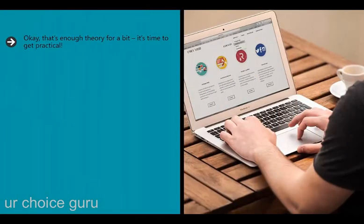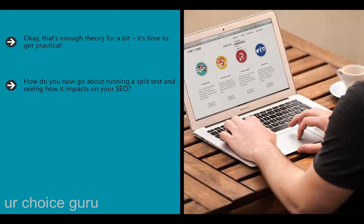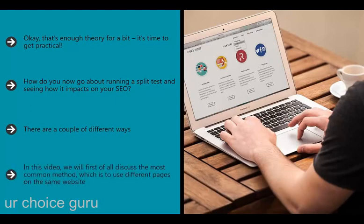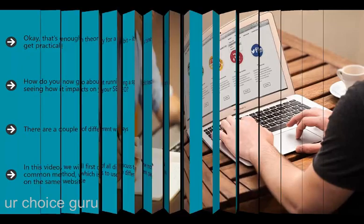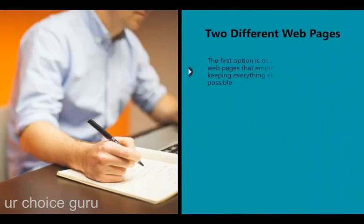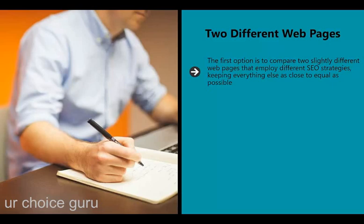Okay, that's enough theory - it's time to get practical. How do you go about running a split test and seeing how it impacts your SEO? There are two common methods: creating two different versions of a web page, versus creating one page that loads differently for different users. The first and most common method is to use different pages on the same website. The first option is to compare two slightly different web pages that employ different SEO strategies, keeping everything else as close to equal as possible.